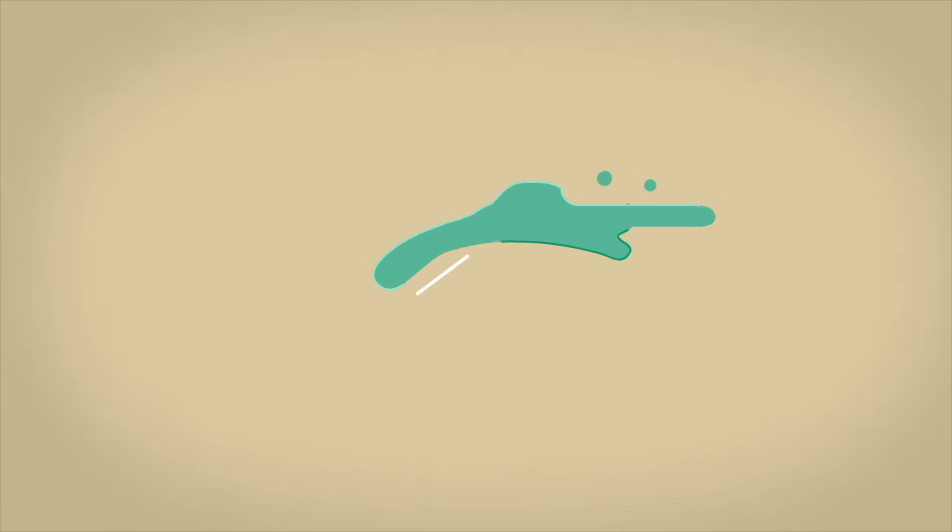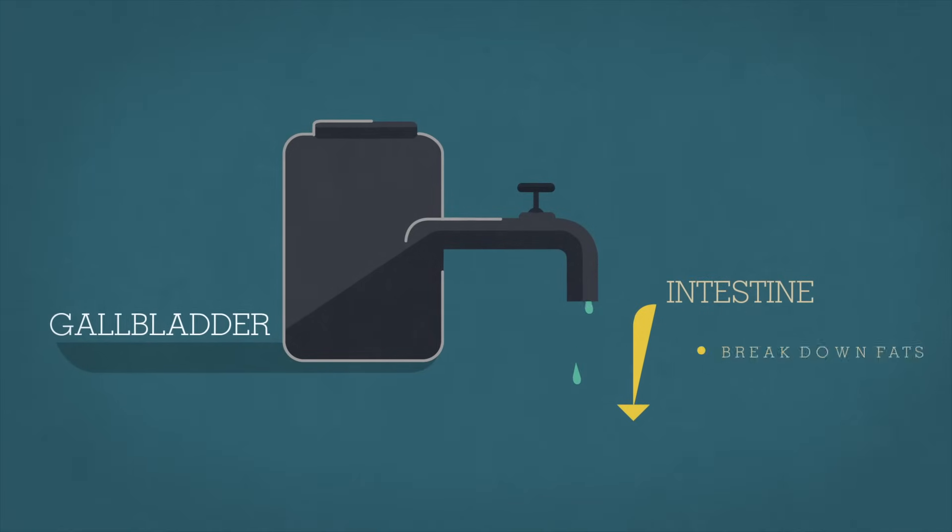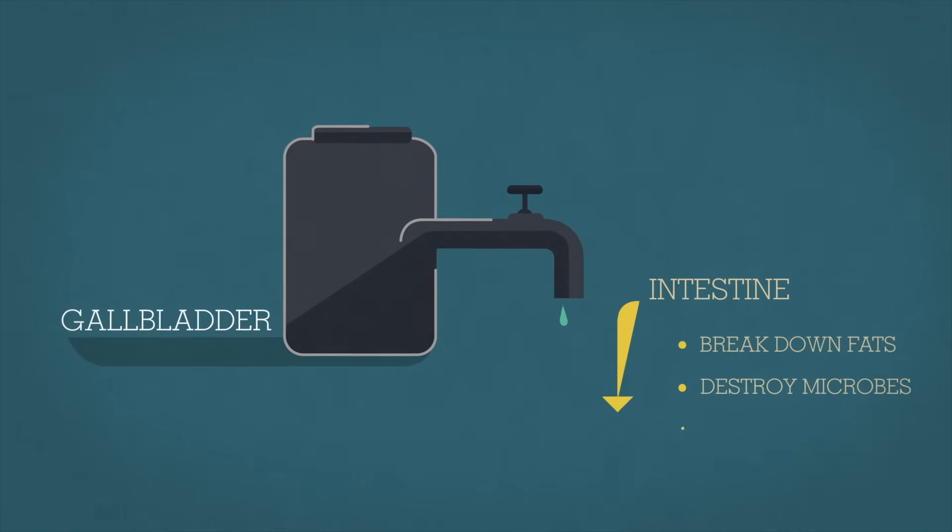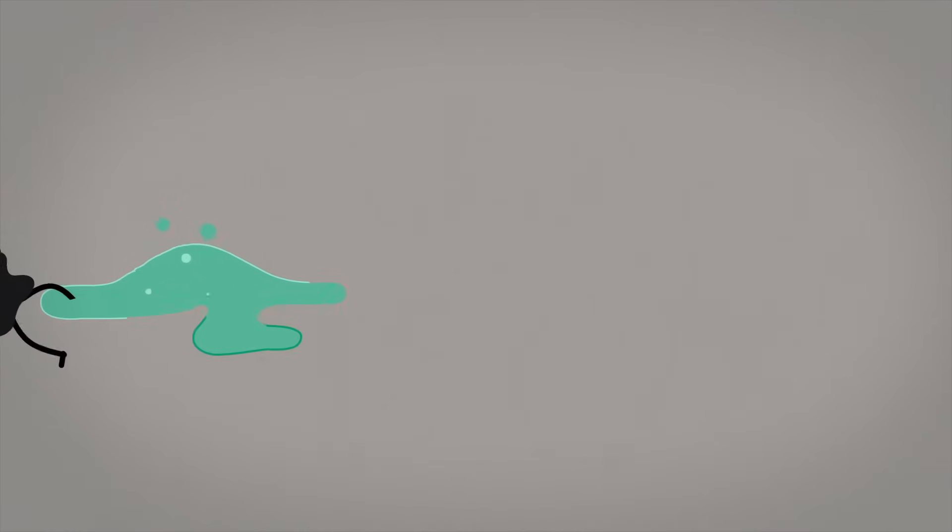As it's produced, bile is funneled into a small container below the liver, called the gallbladder, before being trickled into the intestine to help break down fats, destroy microbes, and neutralize extra stomach acid. Bile also helps carry other toxins and byproducts from the liver out of the body.